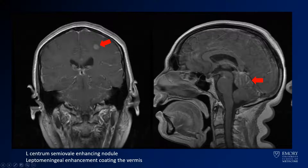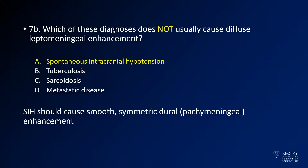This is what posterior fossa leptomeningeal disease looks like. The answer to the second question is that spontaneous intracranial hypotension usually does not cause leptomeningeal enhancement. In that case you usually get smooth, symmetric dural enhancement — that is pachymeningeal enhancement, not leptomeningeal.